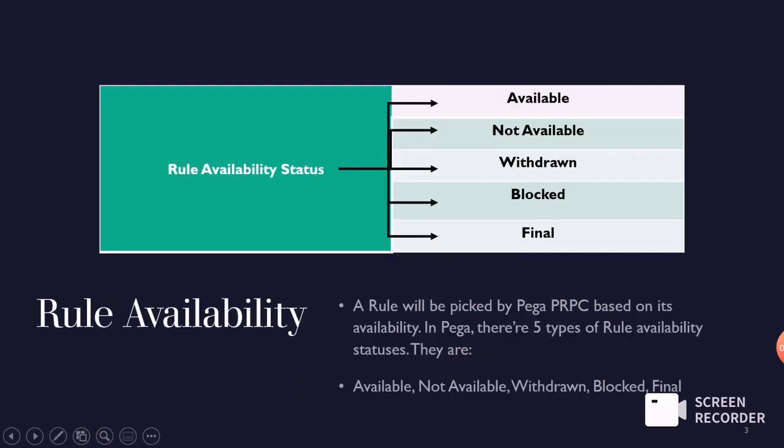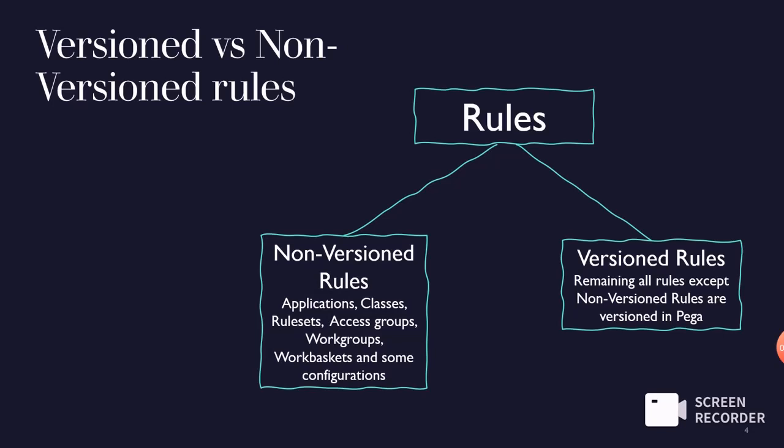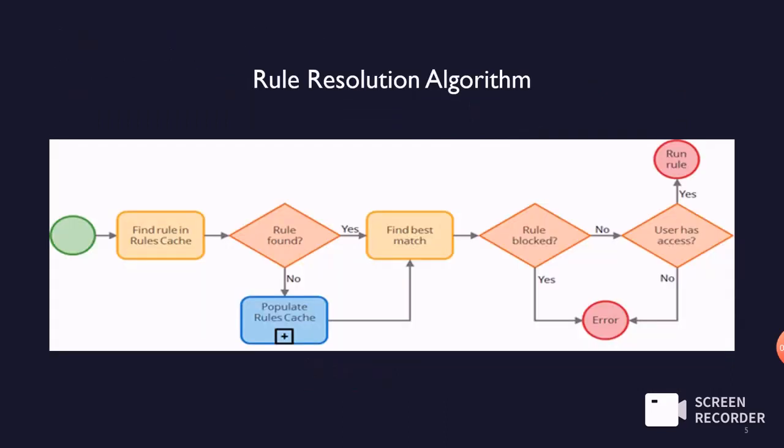In Pega, rules can be versioned or non-versioned. Non-versioned rules include applications, classes, rulesets, access groups, work groups, and work baskets. All other rules are versioned — for example, a rule you create starts at 01.01 and progresses through minor and patch versions like 01.02, 01.03, and so on. The highest version of a rule will be executed at runtime, and lower versions are ignored unless the highest version's status is set to Not Available or Blocked.